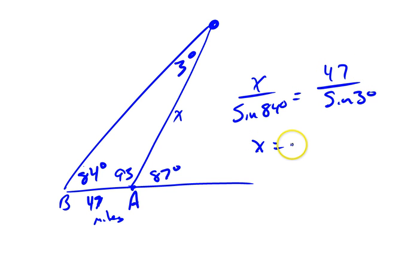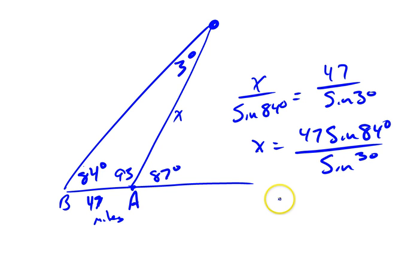So x equals 47 sine 84 degrees divided by the sine of 3 degrees, which I get is 893.124.